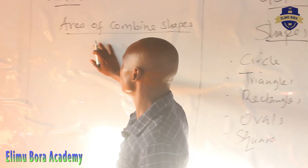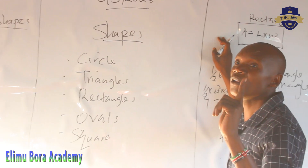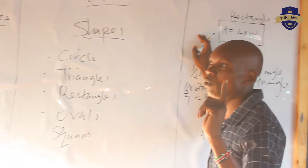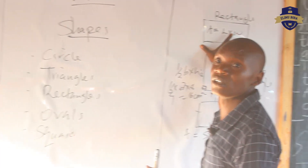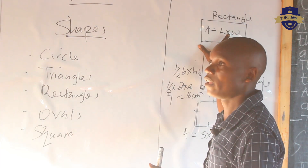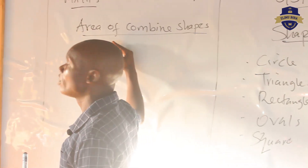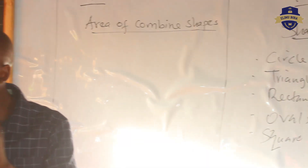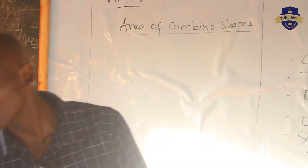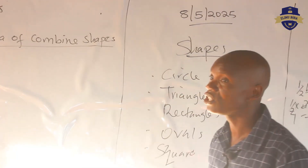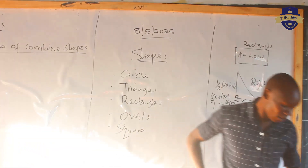So, back to what we want to learn today. In grade 5, you are dealing with an individual figure. Now, in this class, because this is grade 6, we are now going to deal with problems where one figure contains two or more than one shape. For example, let me show you what we mean by combined shape.